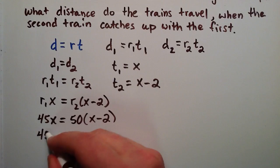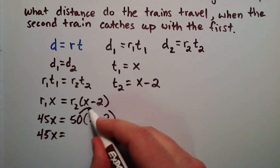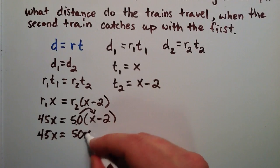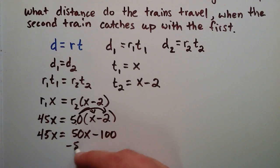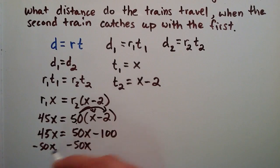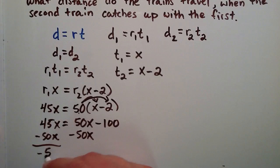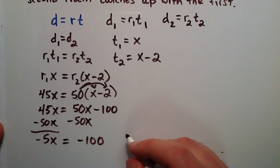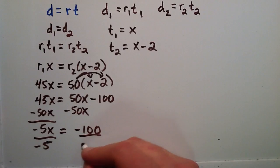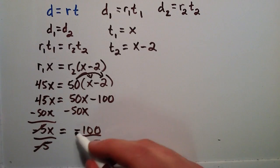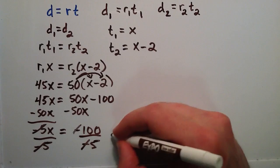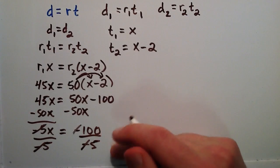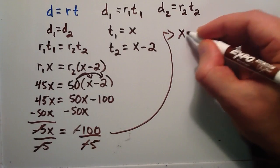We distribute 50 into the parentheses: 45x equals 50x minus 100. Subtracting 50x from both sides gives negative 5x equals negative 100. Dividing each side by negative 5, the negatives cancel, and we get x equals 100 divided by 5, which equals 20.